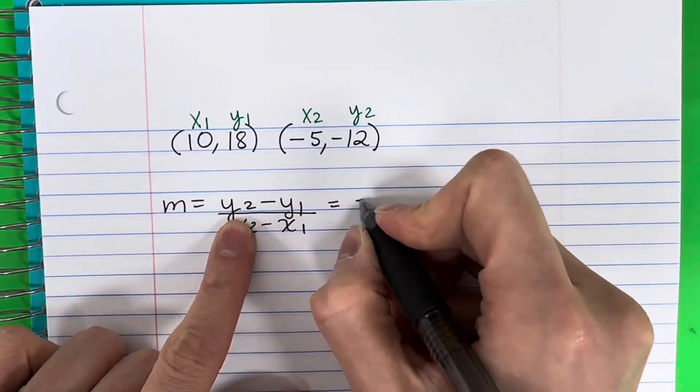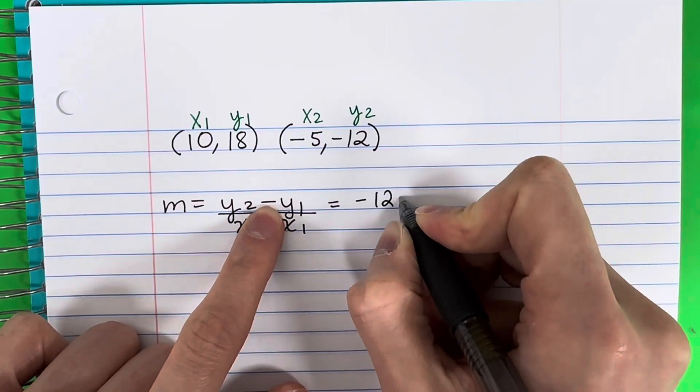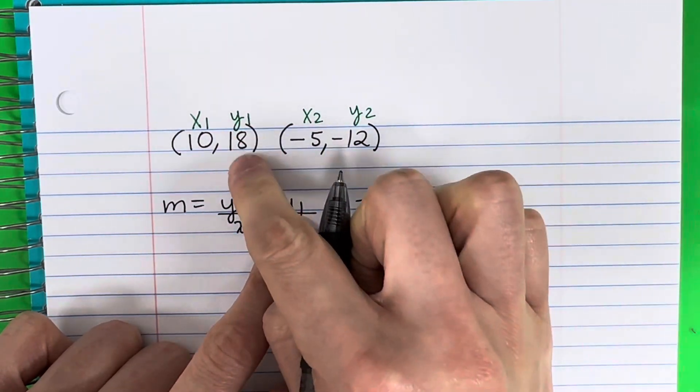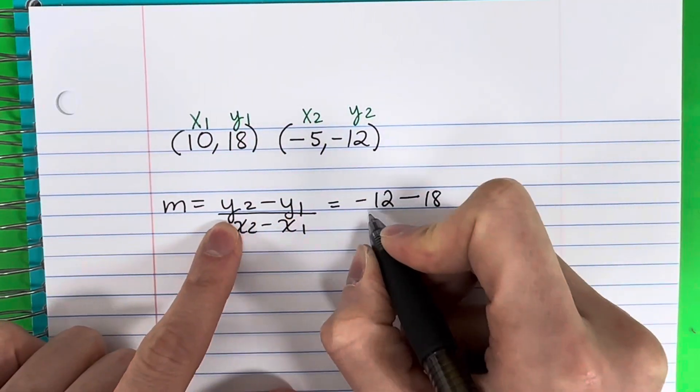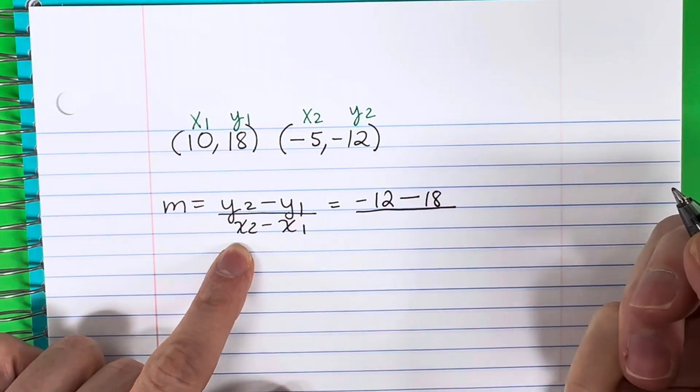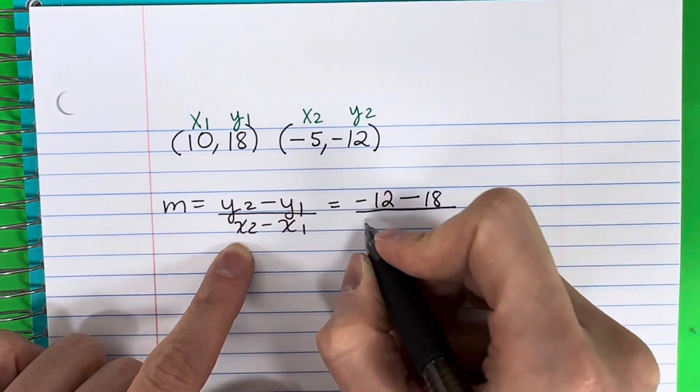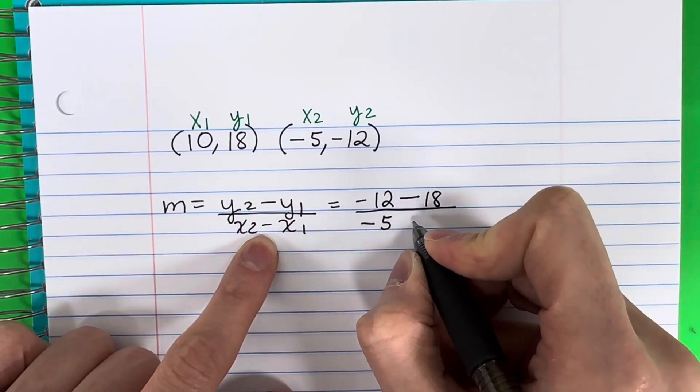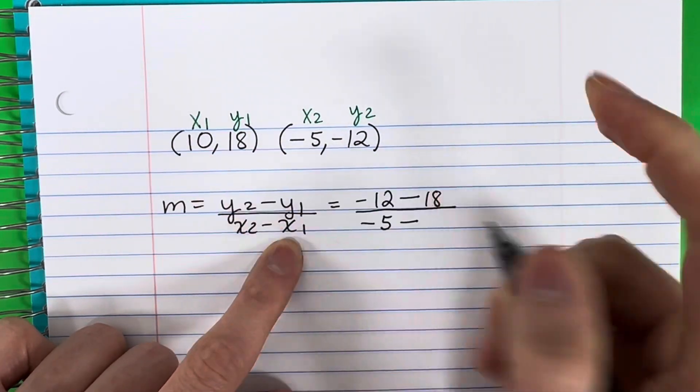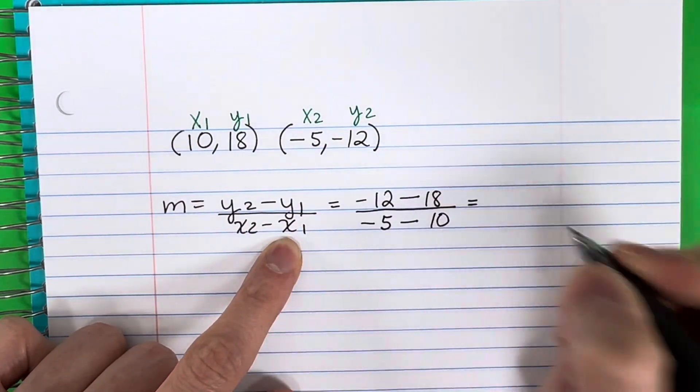So y2 is negative 12 minus y1 is 18, divided by x2 is negative 5 minus x1 is 10. Equals.